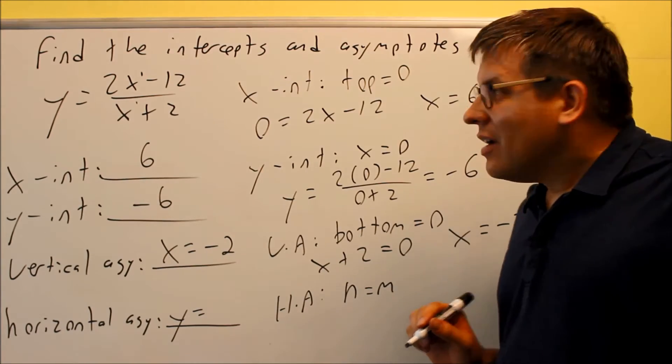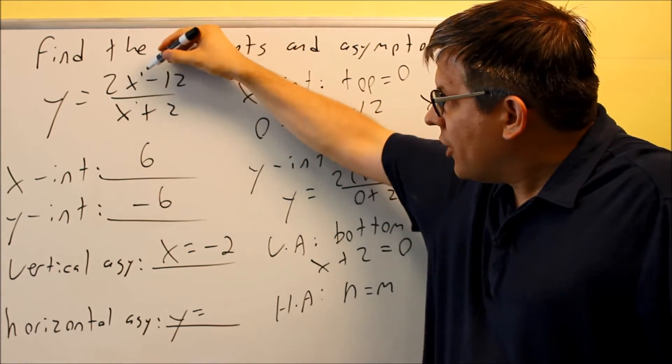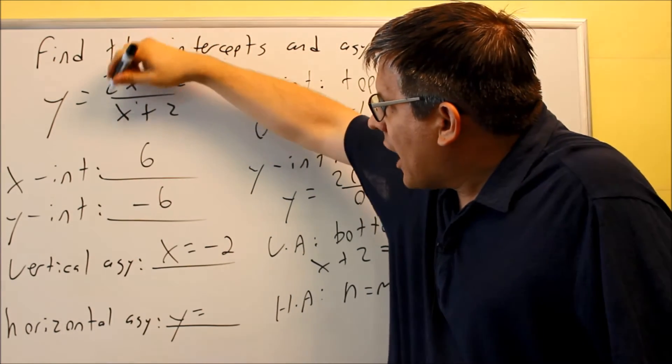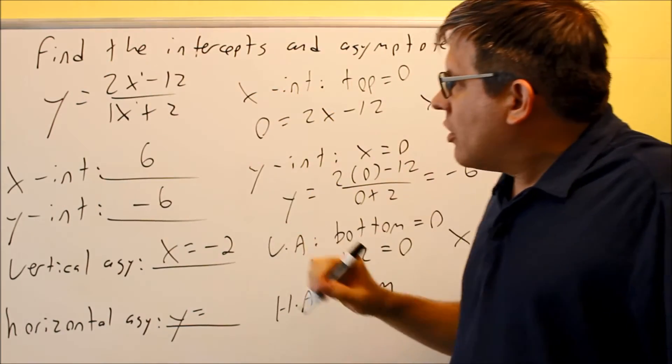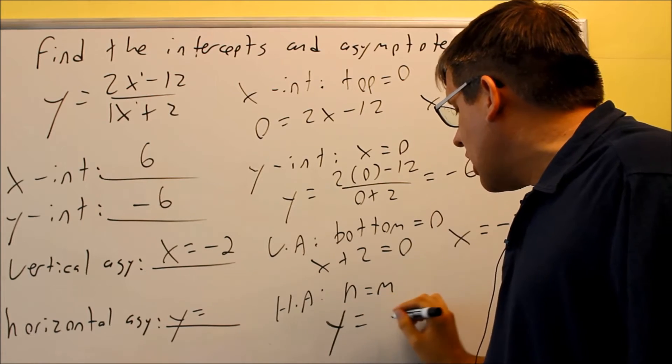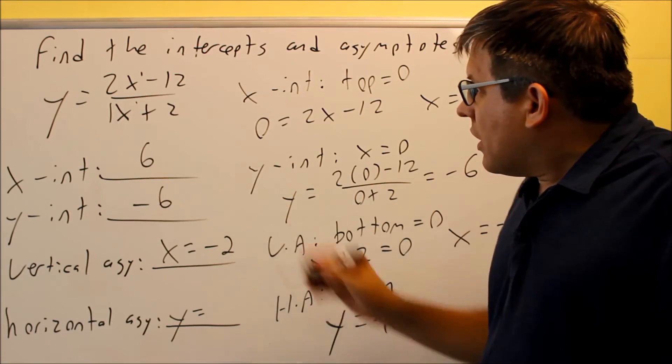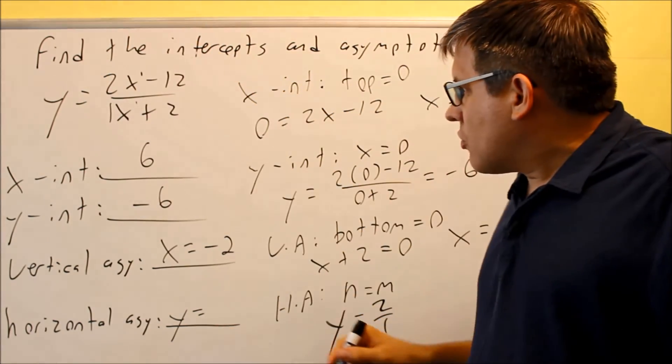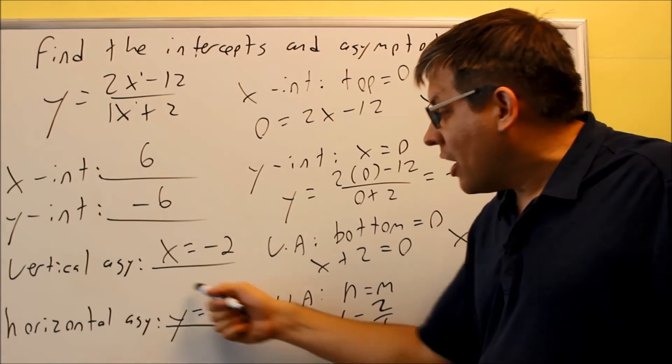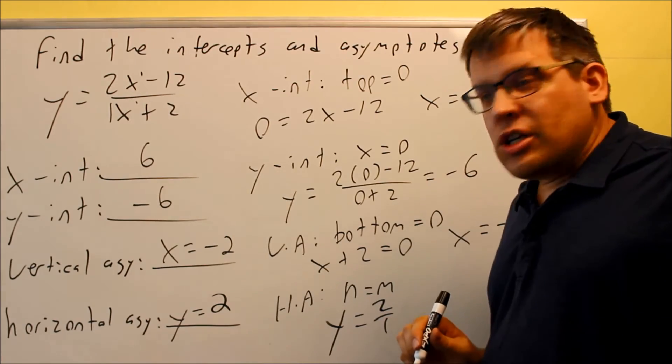The second rule says that if the highest power on top and bottom is the same, that's what we have going on here, because the highest power is 1, the highest power down there is 1, then what happens is you're just going to divide the two leading coefficients. That's what the rule says to do. So in that case, you're going to say that y is equal to 2 divided by 1, and you're dividing these coefficients, so 2 over 1 will give you 2. So therefore, the equation for your horizontal asymptote, again, you need the y equals there as part of your answer, it's going to be y equals 2.